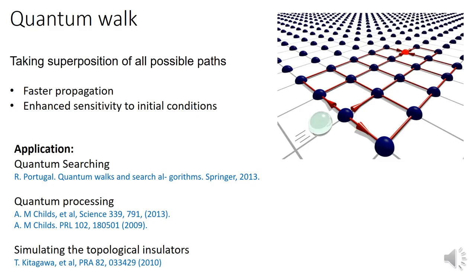There is significant effort in making quantum hardware that outperforms classical counterparts, both in performing certain algorithms and in simulating other complicated quantum systems. Among different approaches, implementing the quantum walk receives wide interest. Unlike classical random walk, particles performing a quantum walk can take superposition of all possible paths through their environment simultaneously, leading to faster propagation and enhanced sensitivity to initial conditions. These properties provide an appealing basis for implementation of quantum algorithms like searching, quantum processing, and simulation of topological insulators.